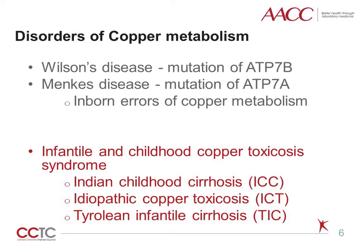The copper-glutathione complex through canalicular multi-specific organ-anion transporter is another minor route of hepatocellular copper excretion. There are two disorders, inborn errors of copper metabolism, which are well characterized but rare in nature. These are Wilson's disease and Menkes disease. Both these disorders are as a result of mutation in the copper-transporting P-type ATPases, ATP7B and ATP7A respectively. Further, there is a group of disorders that are a combination of environmental and genetic causes, which are the infantile and idiopathic copper toxicosis and Tyrolean infantile cirrhosis.